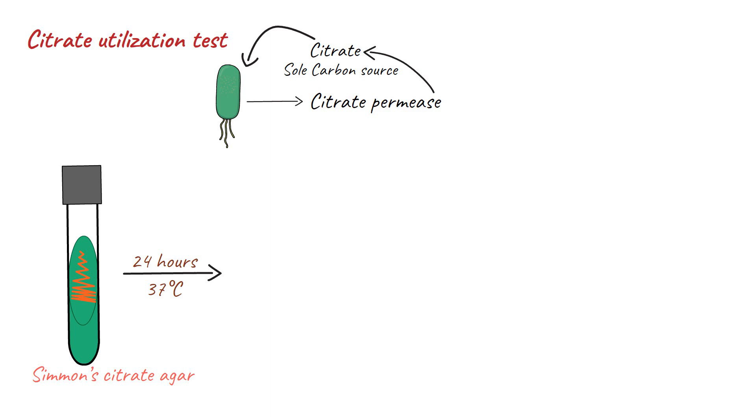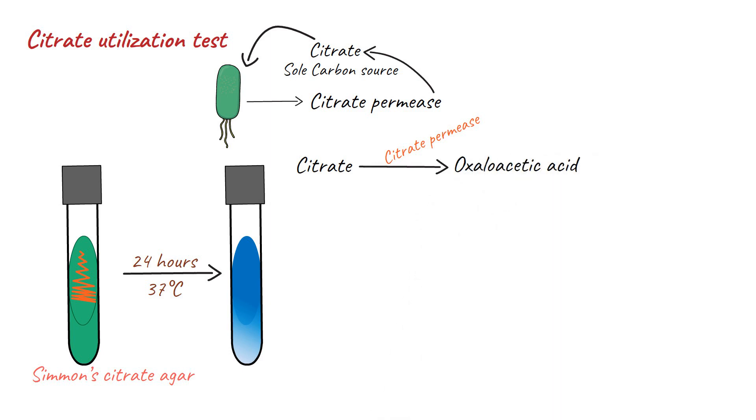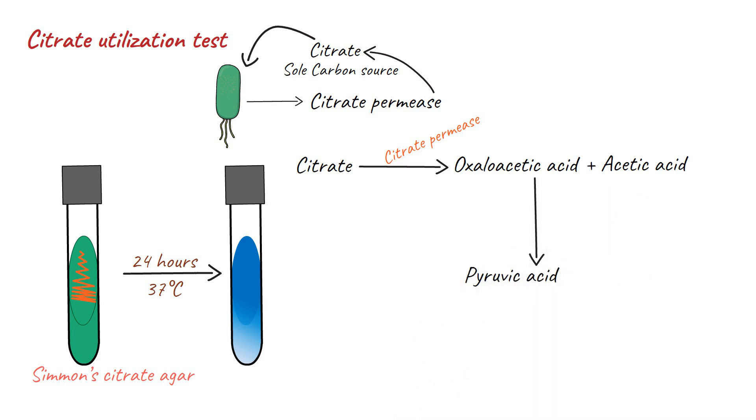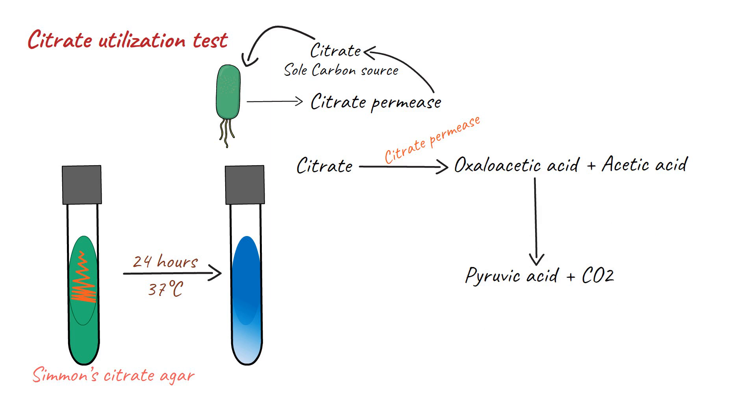A positive test will be indicated by the change in color of the medium from green to blue. The utilization of citrate in the media involves citrate permease enzyme, which breaks down citrate into oxaloacetic acid and acetic acid. The oxaloacetic acid further breaks down into pyruvic acid and carbon dioxide.